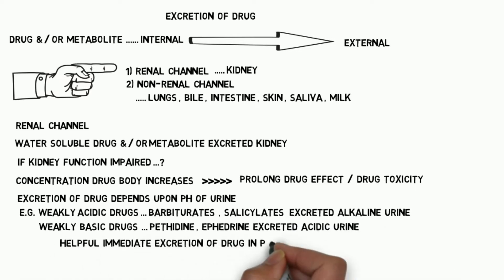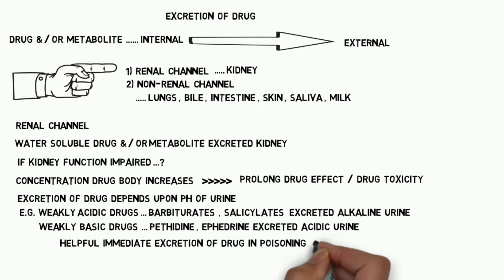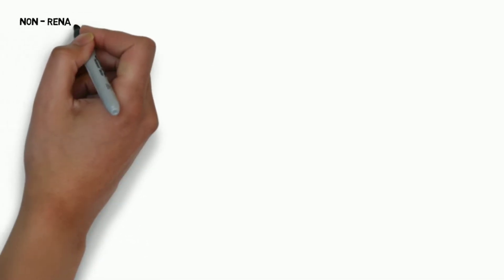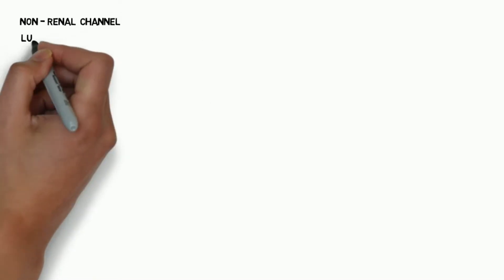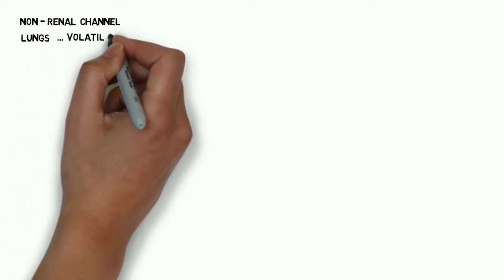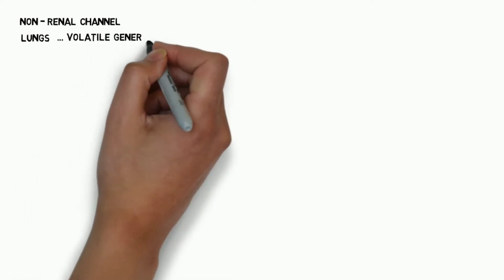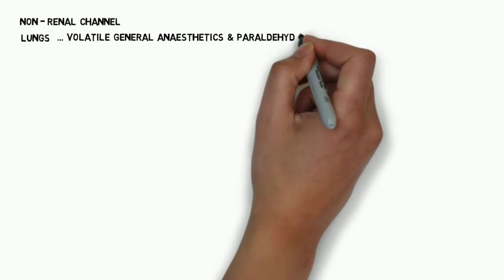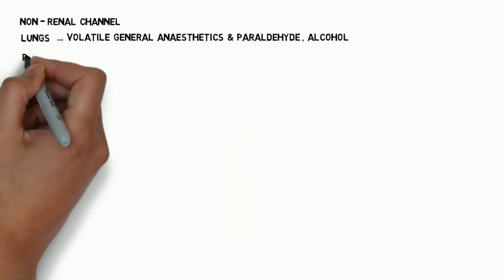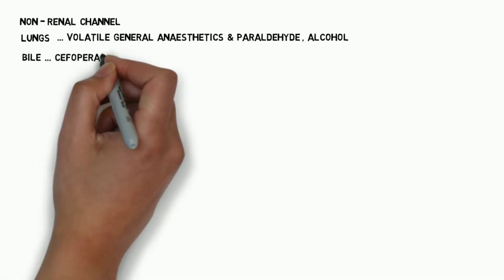This is helpful in promoting immediate excretion of drug in drug poisoning cases. For non-renal channels, the first is lungs — volatile general anesthetics, paraldehyde, and alcohol are excreted via the lungs.